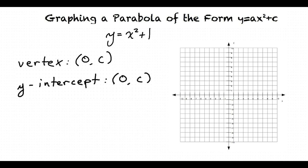How do we also know that the vertex is at 0 comma c? We know that it is at that point because the formula for the x value of the vertex is x equals negative b over 2a. Because we have no b in this function, b is 0.